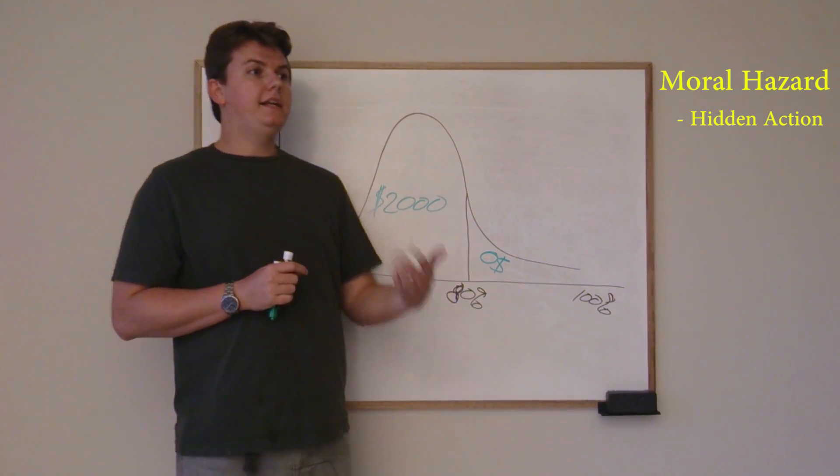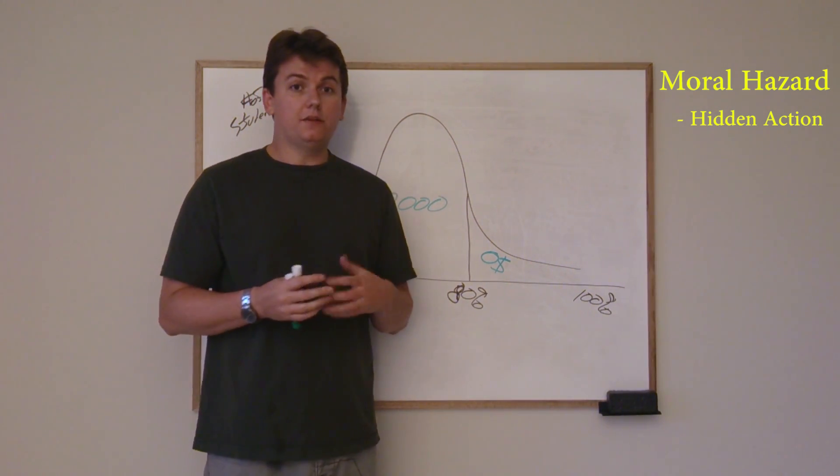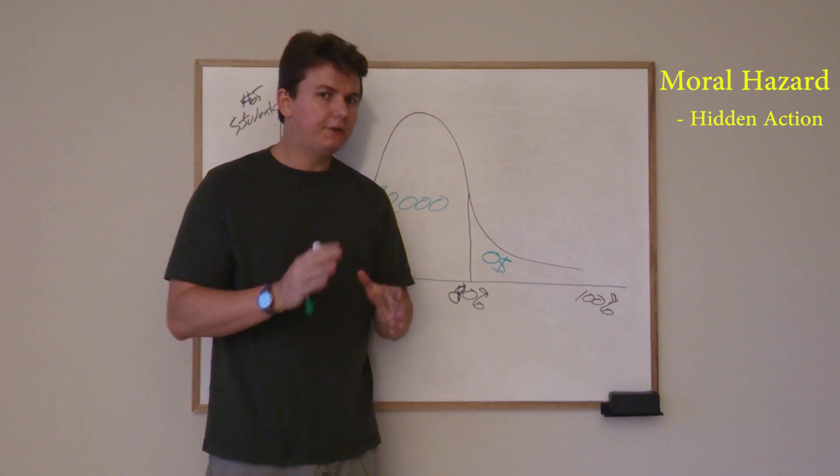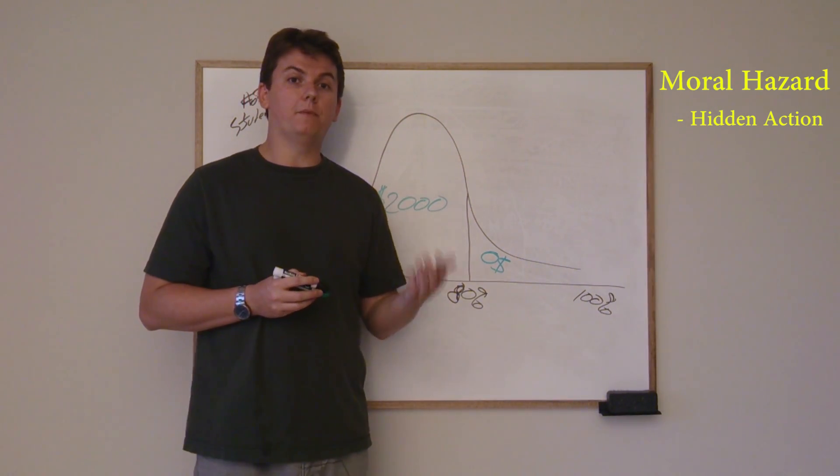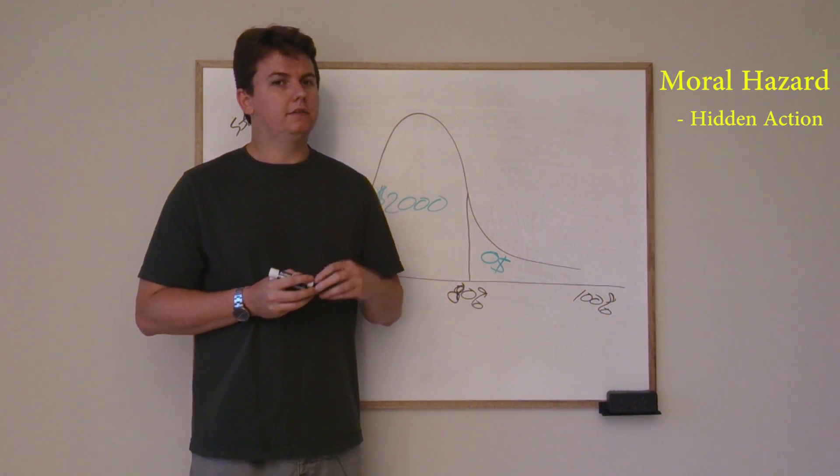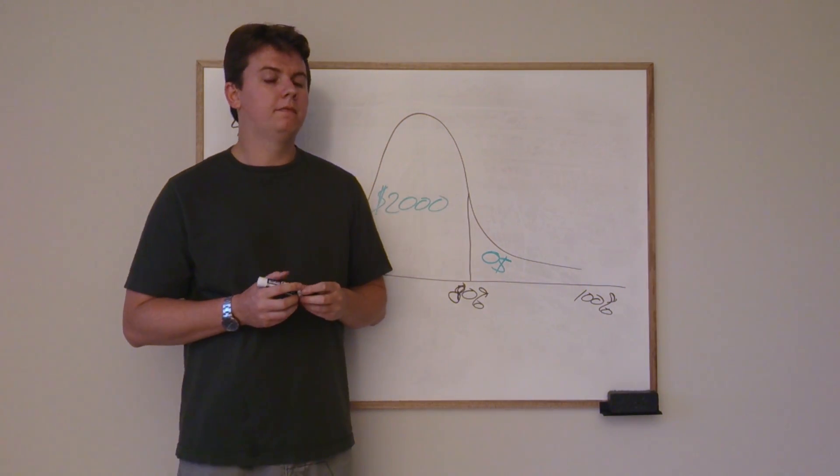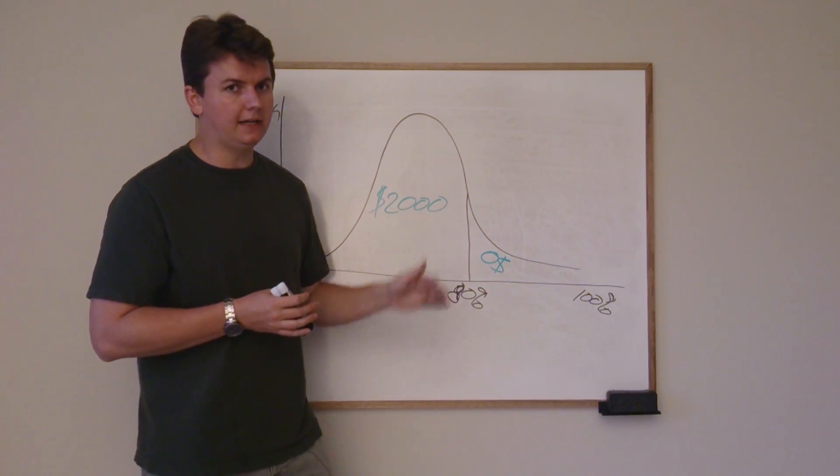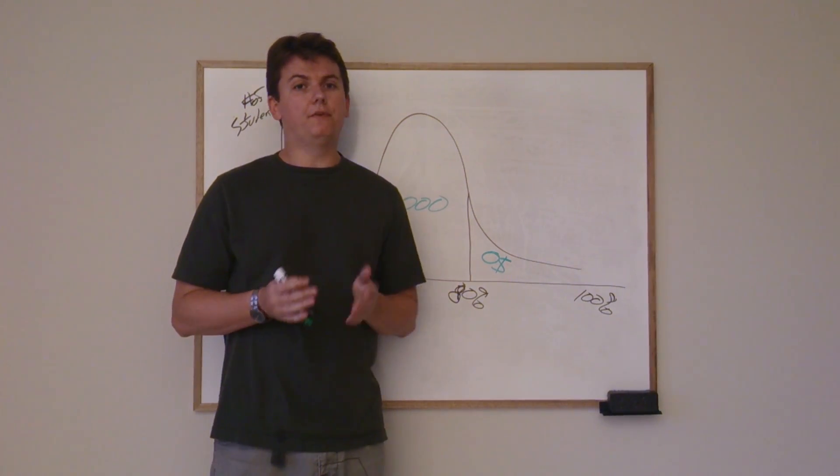So them hiding the fact of how much they study and the fact that I can't monitor them, that is the hidden action that brings about the moral hazard. Now, with this same example, we want to talk about adverse selection.